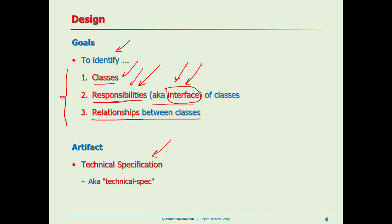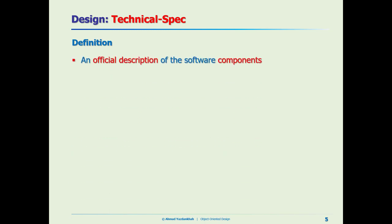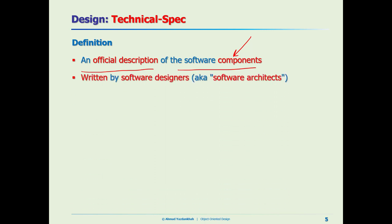So what is the technical specification? The technical spec is an official document which describes the software components — all of the parts of the software that are going to be designed and implemented. We will put them in this technical spec. It is written by the software designer or software architect.